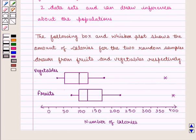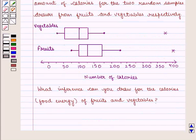Let us take an example. The following box and whisker plot shows the amount of calories for the two random samples drawn from fruits and vegetables respectively. What inference can you draw for the calories, food energy of fruits and vegetables?